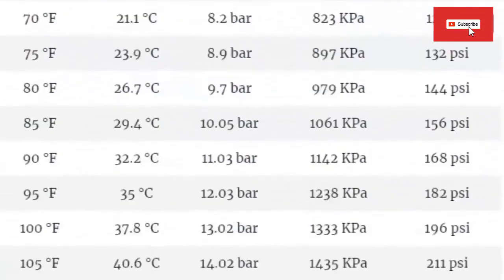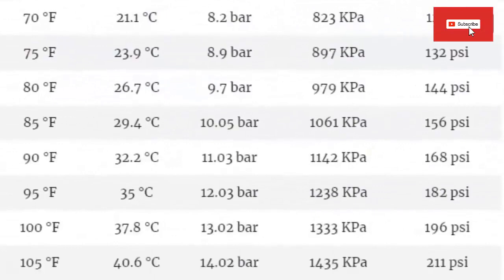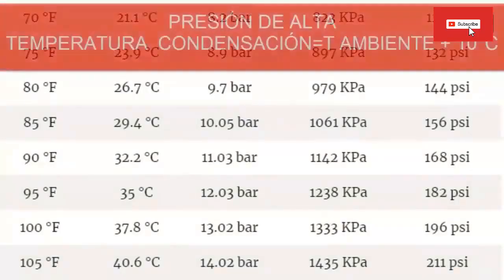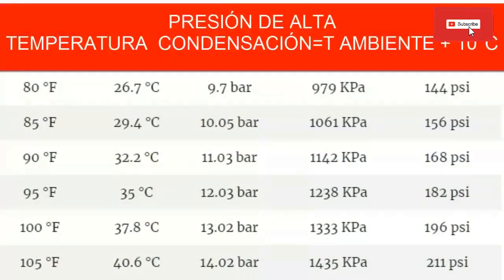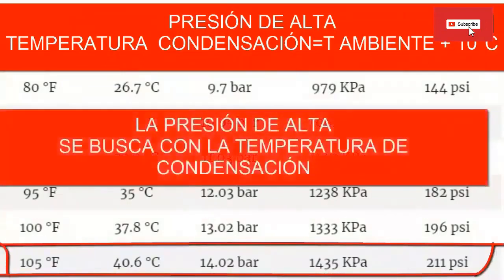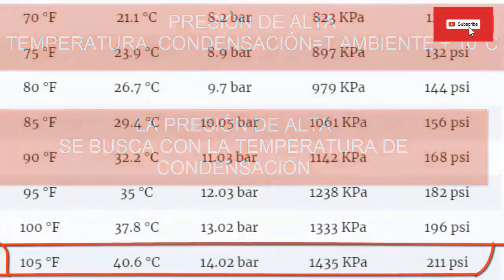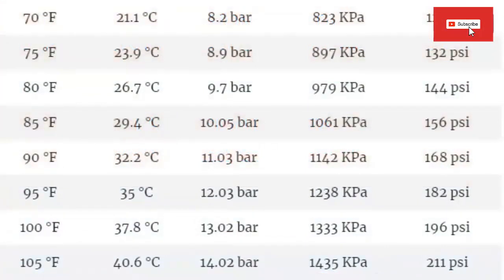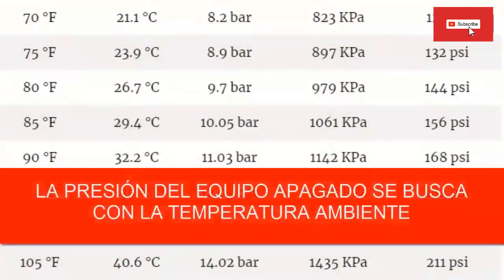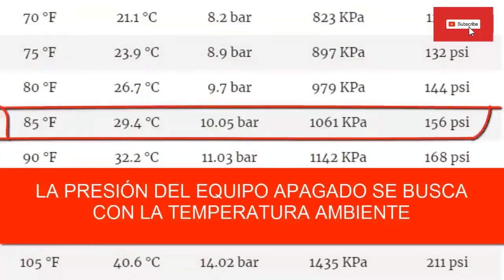For the high pressure, taking an external environmental temperature of 30 degrees Celsius as an example, we increase this value by 10 degrees Celsius and look in the table for approximately 40 degrees Celsius, obtaining a pressure of approximately 211 psi, equivalent to 14 bar. Another important pressure value is when the equipment is turned off: at 30 degrees Celsius room temperature, the table gives an approximate value of 156 psi.